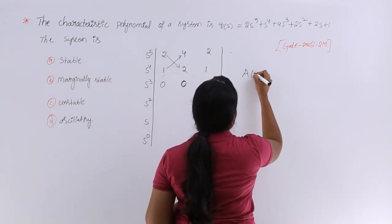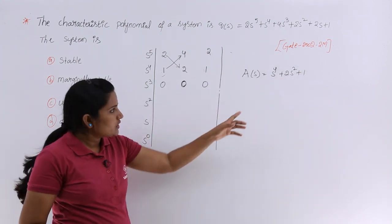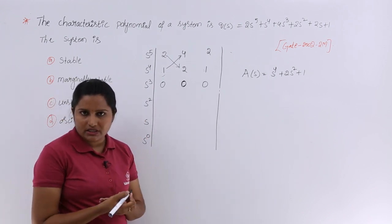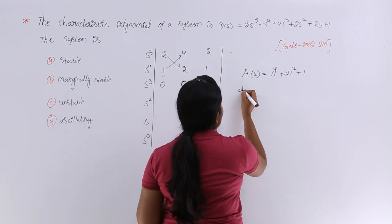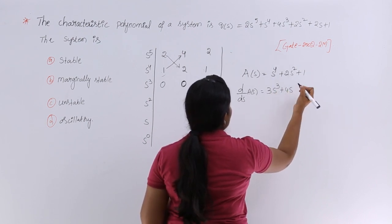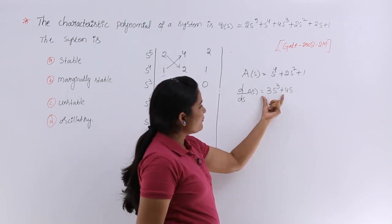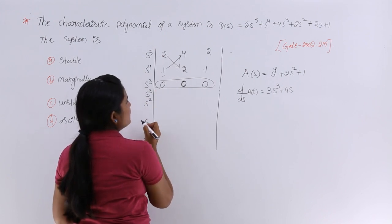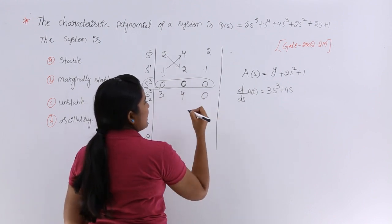The auxiliary equation is s^4 + 2s^2 + 1 = 0. The auxiliary equation must always contain only even powers of s — that is the mandatory condition. Now we differentiate: d/ds of A(s) gives 4s^3 + 4s. After differentiating, we replace the zero row with the differential coefficients. So in place of the s^3 row we place the coefficients: 4, 4, 0.